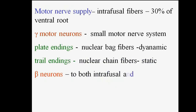Regarding the motor nerve supply of intrafusal fibers, 30 percent comes from the ventral root, while gamma motor neurons form the small motor nerve system. Plate endings are nuclear bag fibers and are dynamic, while trail endings are nuclear chain fibers and are static. That means plate endings act as dynamic while trail endings act as static. The dynamic part involves nuclear bag fibers while the static part involves nuclear chain fibers, which are the two basic components.